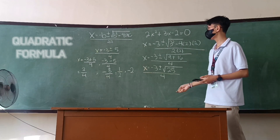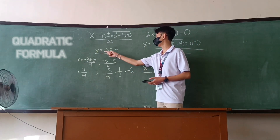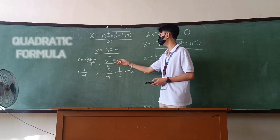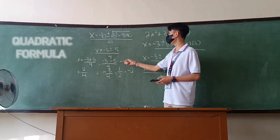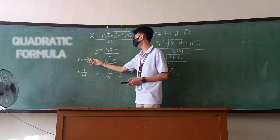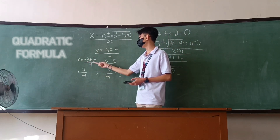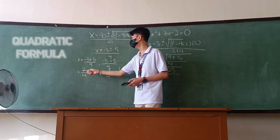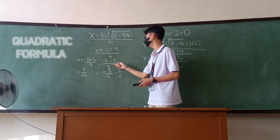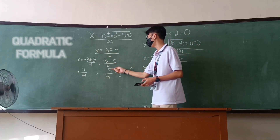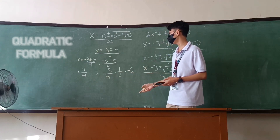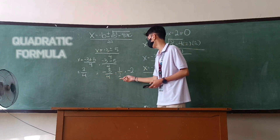So ang sagot natin is x = (-3 ± 5) / 4. Dahil dun, x = (-3 + 5) / 4 = 2/4, and x = (-3 - 5) / 4 = -8/4. Ang sagot dito is 2/4 = 1/2, and -8/4 = -2.